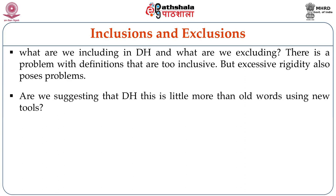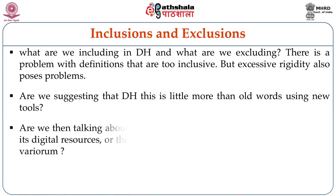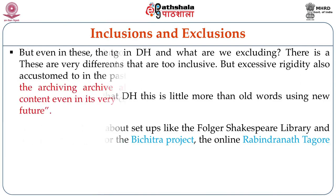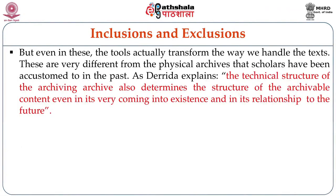There is a problem with definitions that are too inclusive, but excessive rigidity also poses problems. Are we suggesting that DH is little more than old words using new tools when we are talking about Google Books or Project Gutenberg? Are we talking about setups like the Folger Shakespeare Library and its digital resources or the Bichitra Project, the online Rabindranath Tagore variorum? But even in these, the tools actually transform the way we handle the texts — these are very different from the physical archives that scholars have been accustomed to in the past.